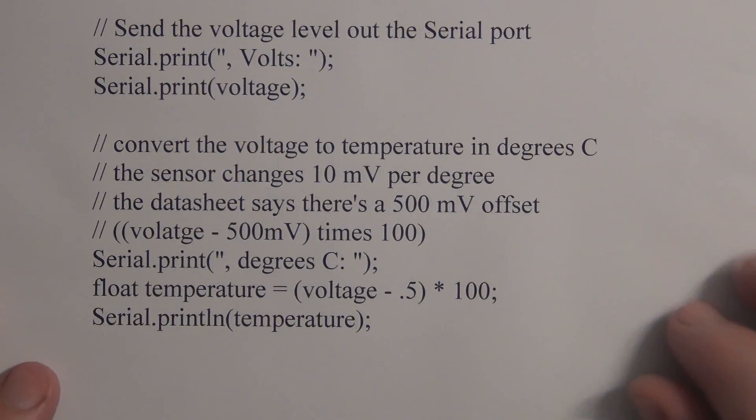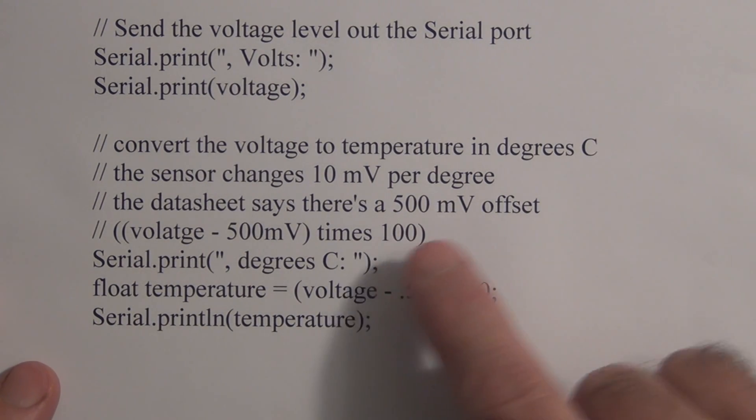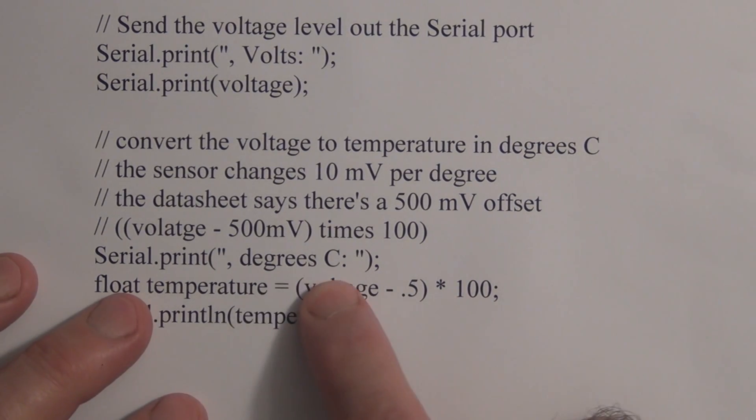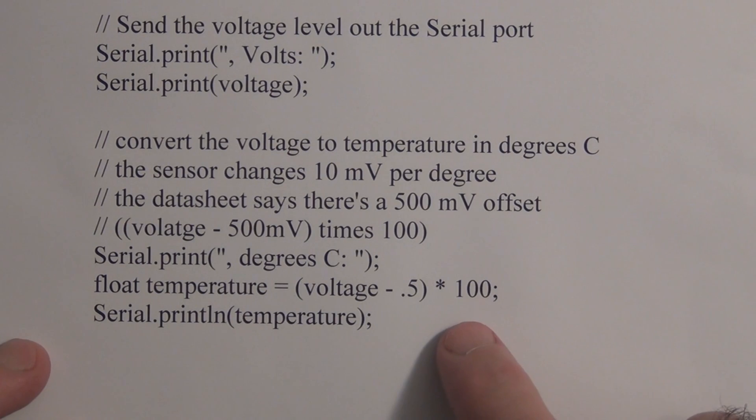Then we convert that to Celsius and there's some offset, so we had to subtract 0.5 and then multiply it by 100 to convert that into degrees Celsius. But again, it's an analog output voltage that's proportional to temperature.